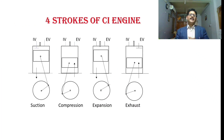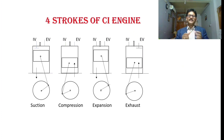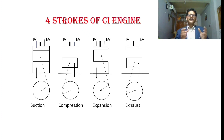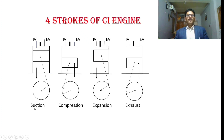Now I will discuss in detail the four strokes of the compression ignition engine. The four strokes are: suction, compression, expansion, and exhaust. We should understand which operations take place in the spark ignition engine also, and what are the fundamental differences between the two as far as the cycle of operation is concerned.